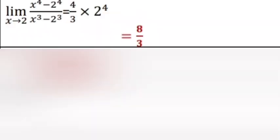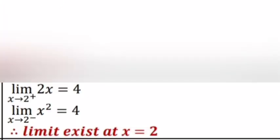Problem 19. Find limit x tends to 2 of f(x). Case 1: f(x) equal (x⁴ minus 16) by (x³ minus 8). Answer: limit equals 4/3 into 2 raised to 4 equal 8/3. Case 2: f(x) equal x squared if x less than or equal to 2; 2x if x greater than 2. Right-hand limit: 2 into 2 equal 4; left-hand limit: 2 squared equal 4. Therefore limit x tends to 2 equals 4.